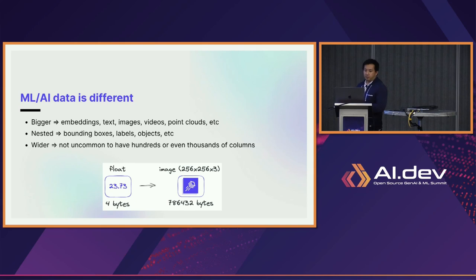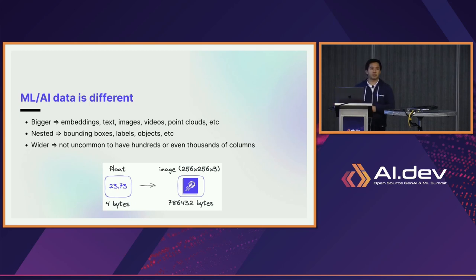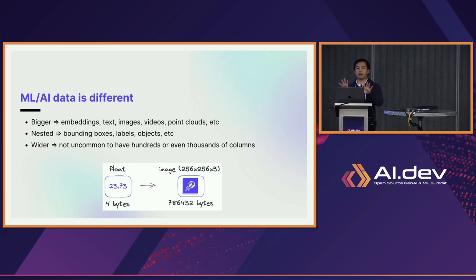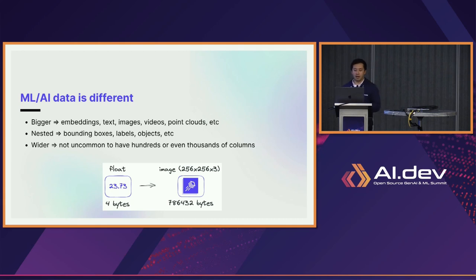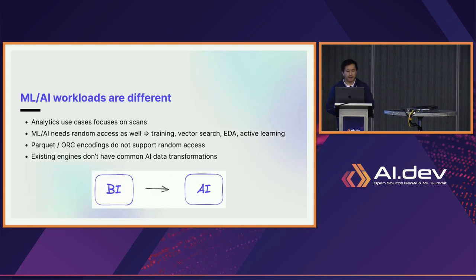The data has become really different and much bigger — from floating-point numbers or integers, we now have embeddings, long-form text, images, videos, point clouds, and so forth. Schemas have also become much more nested: in a single metadata column for an image, you might combine different patches, bounding boxes for each patch, labels, and object identifiers. Tables for machine learning have also become a lot wider — it's not uncommon to have hundreds or even thousands of columns as features for your model.